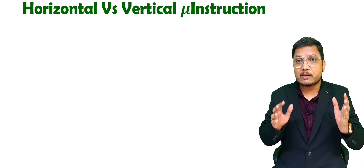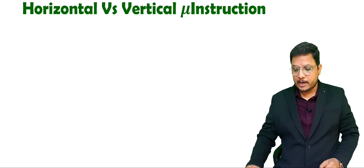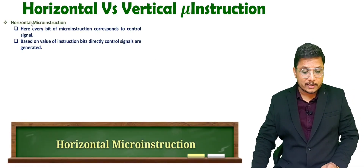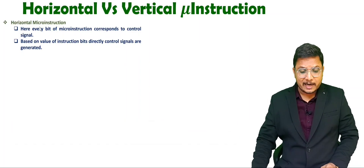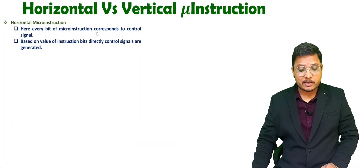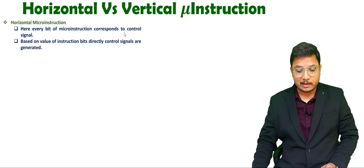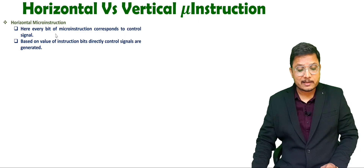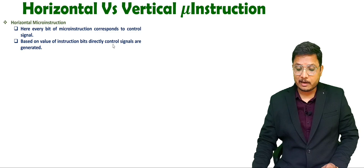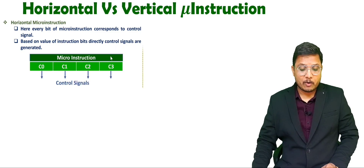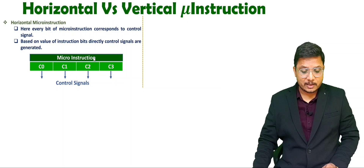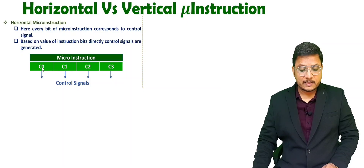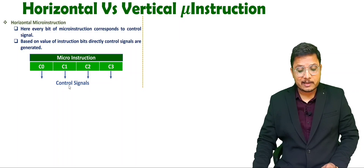Let us talk about horizontal micro instruction first. In horizontal micro instruction, every bit of the micro instruction corresponds to a control signal directly. So micro instruction bits define control signals directly. Based on the value of the instruction bits, it will be generating control signals. For example, if we have a micro instruction with four bits — C0, C1, C2, C3 — those four bits will be generating control signals directly.